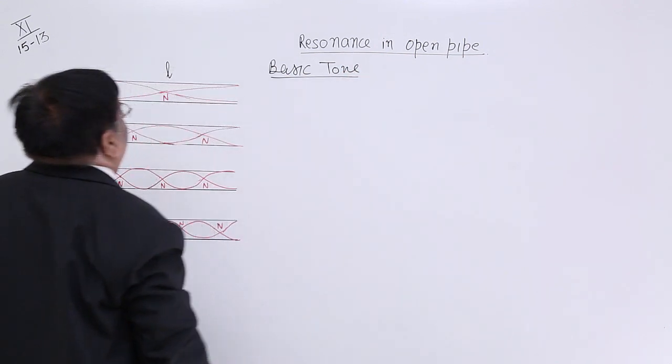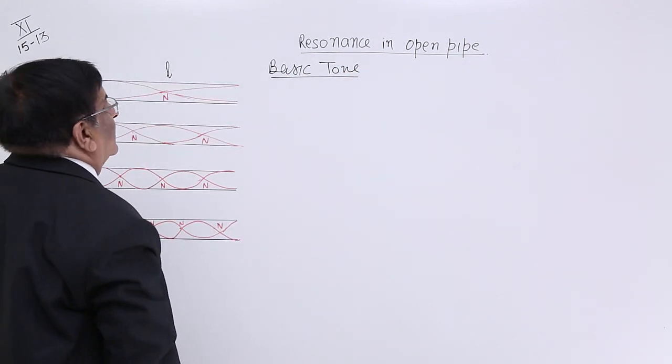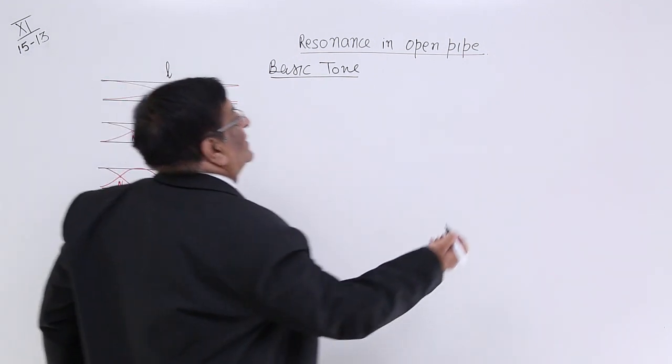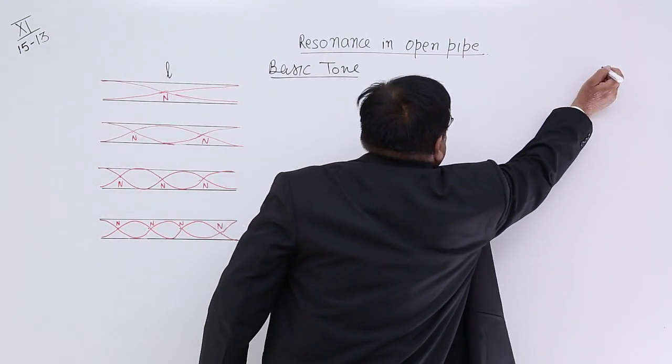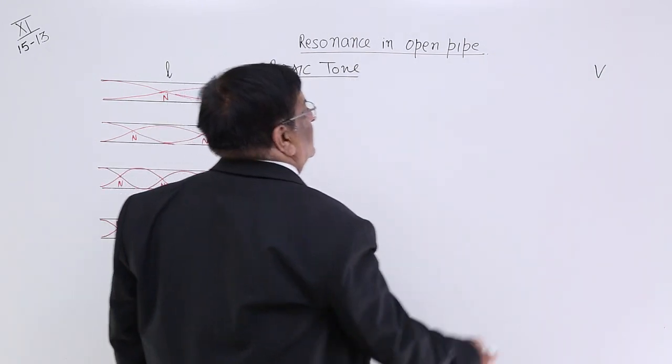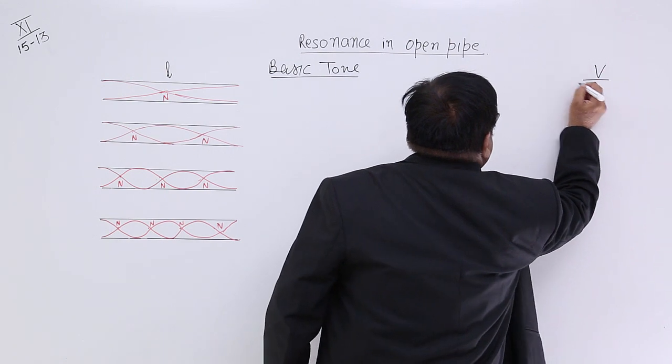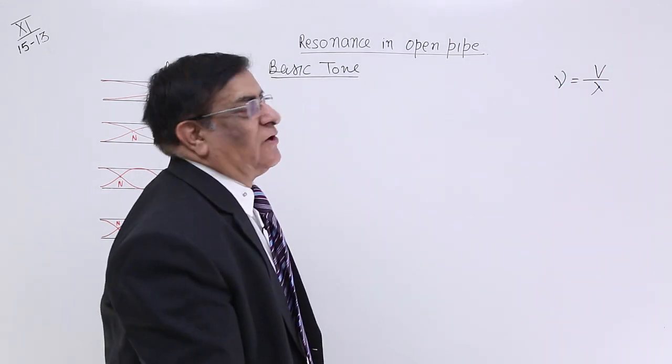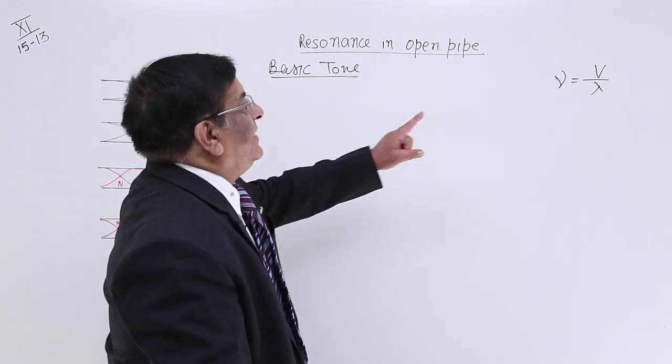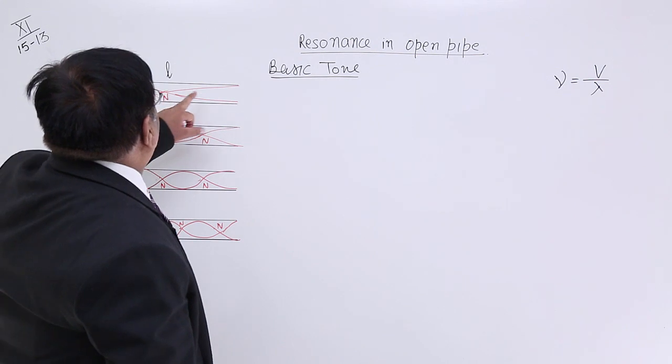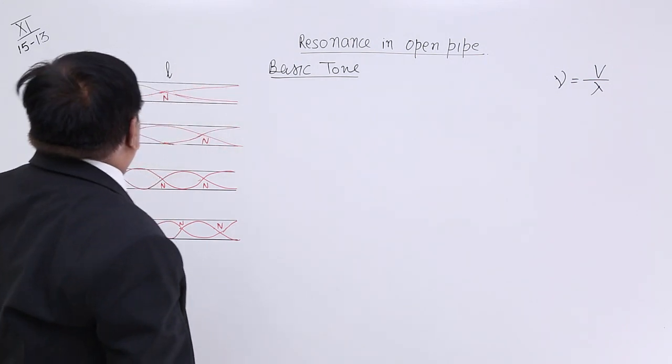How much should be the frequency of this basic tone? We know the velocity of the sound in the air. It has certain value that is v. If we know what is the wavelength here, lambda, then we can always calculate frequency. Frequency is velocity upon lambda where v is velocity and we know the velocity of sound in the air or in any medium.